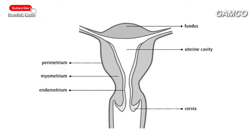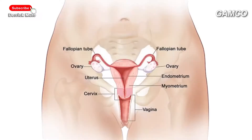The uterine wall has three layers: the perimetrium, the myometrium, and the endometrium. Its function is to nourish and house the fertilized egg or developing fetus. Therefore, it is where implantation occurs.